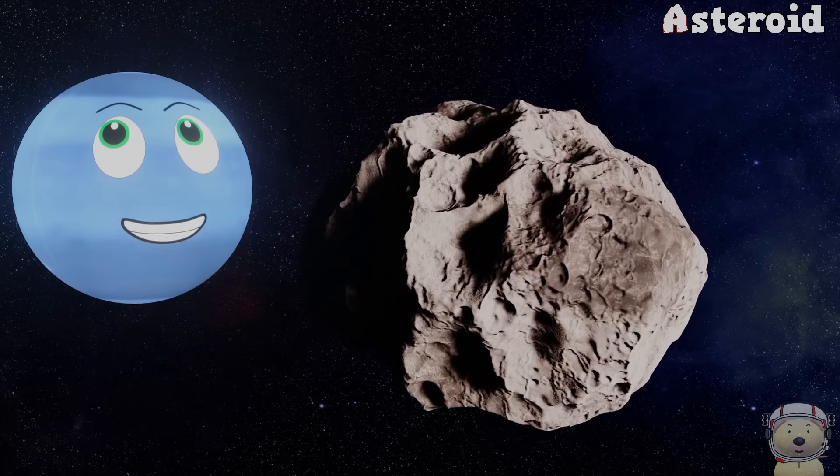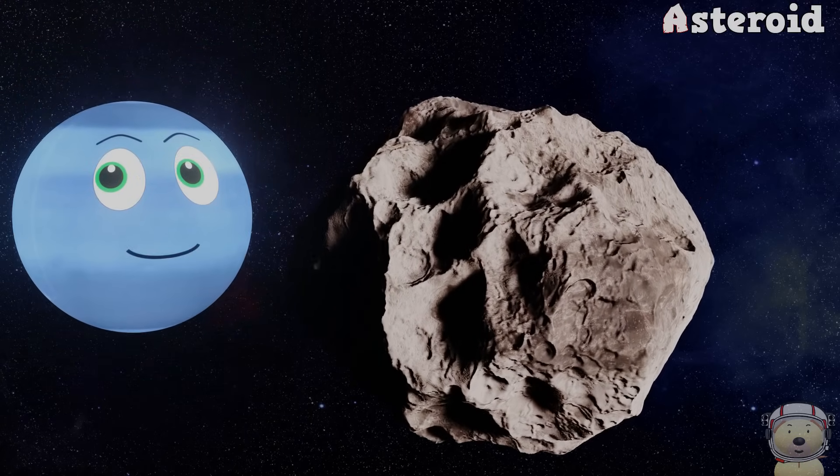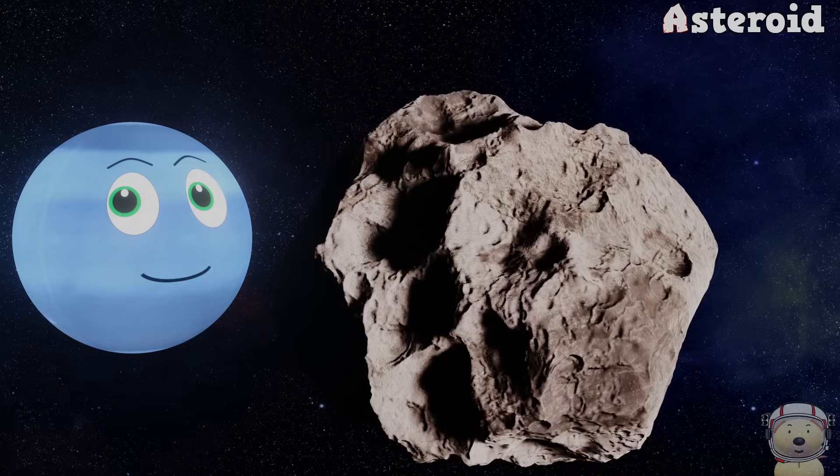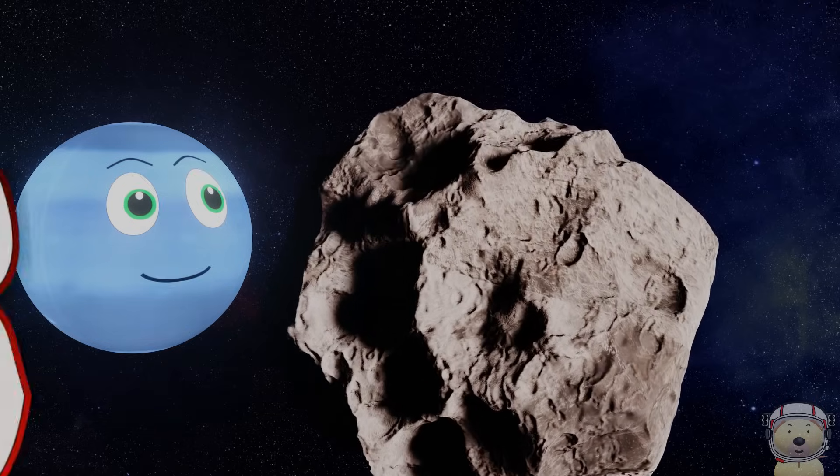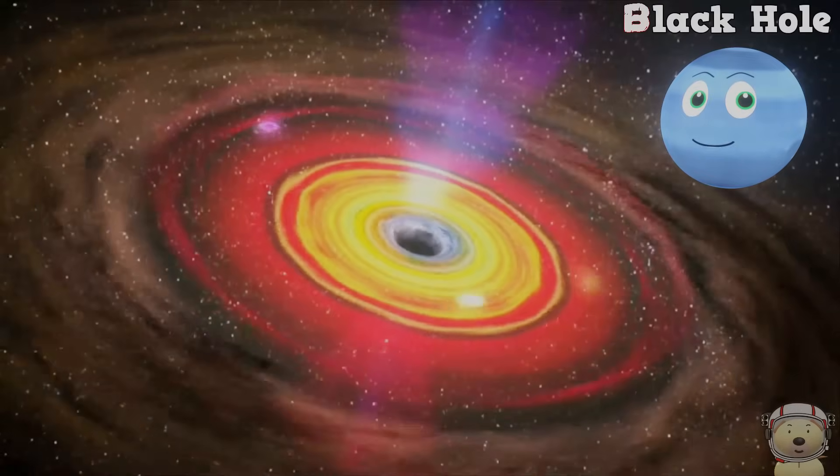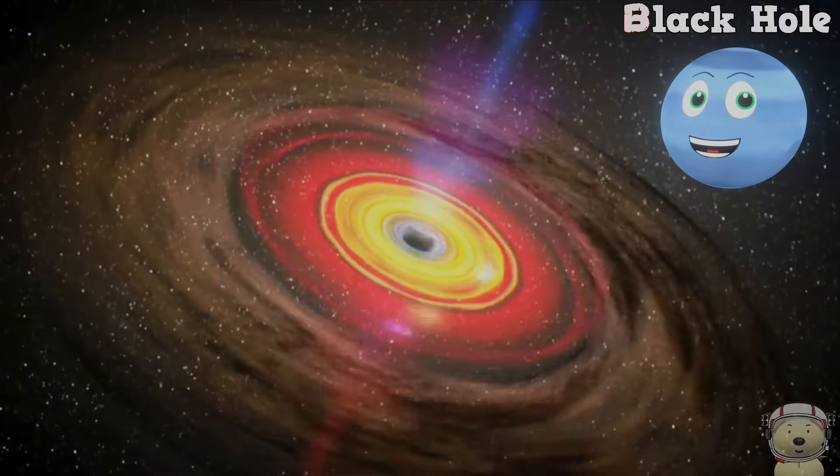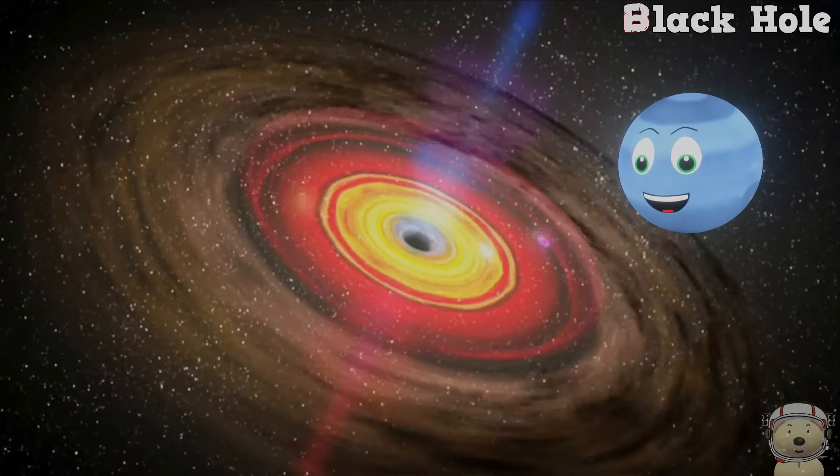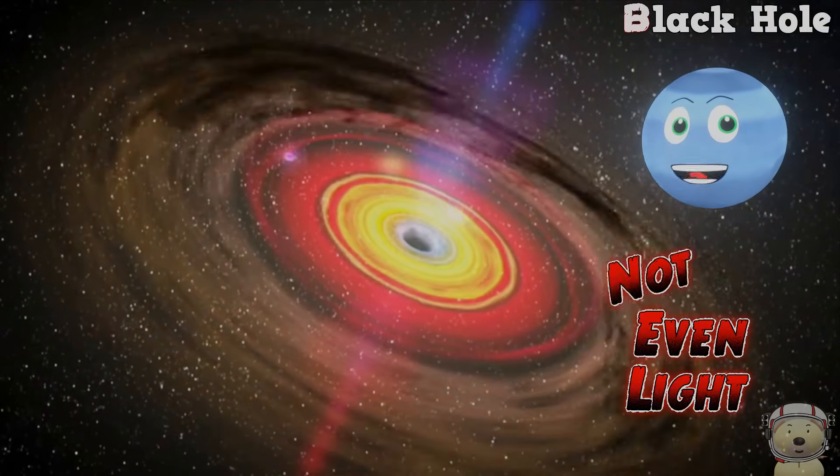A is for asteroid, rocky and cold, spinning through space, some really old. B is for black hole, a scary sight, nothing escapes, not even light.